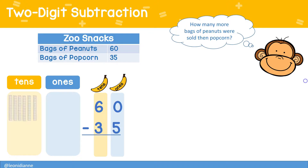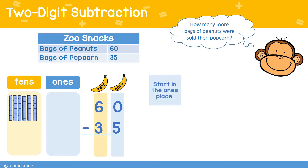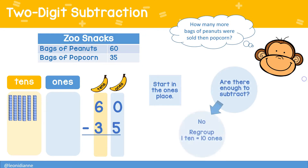Model 60 by showing six tens. As you can see, there are no ones. When we start in the ones place and ask ourselves, do we have enough, we must go to the tens place and regroup.